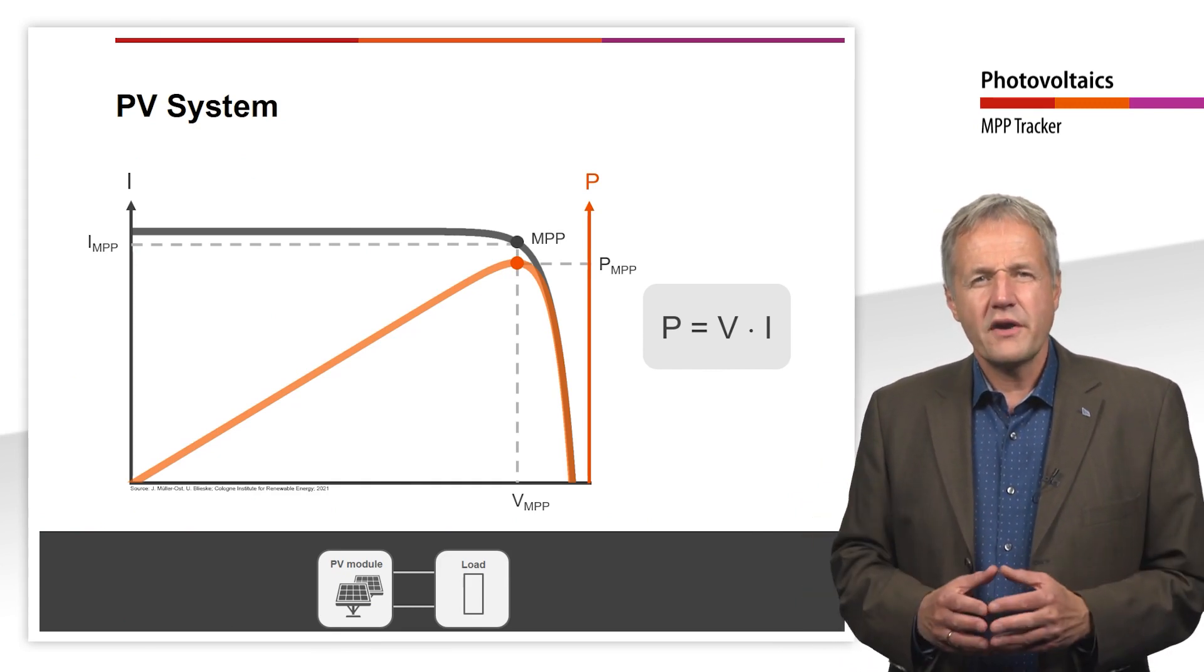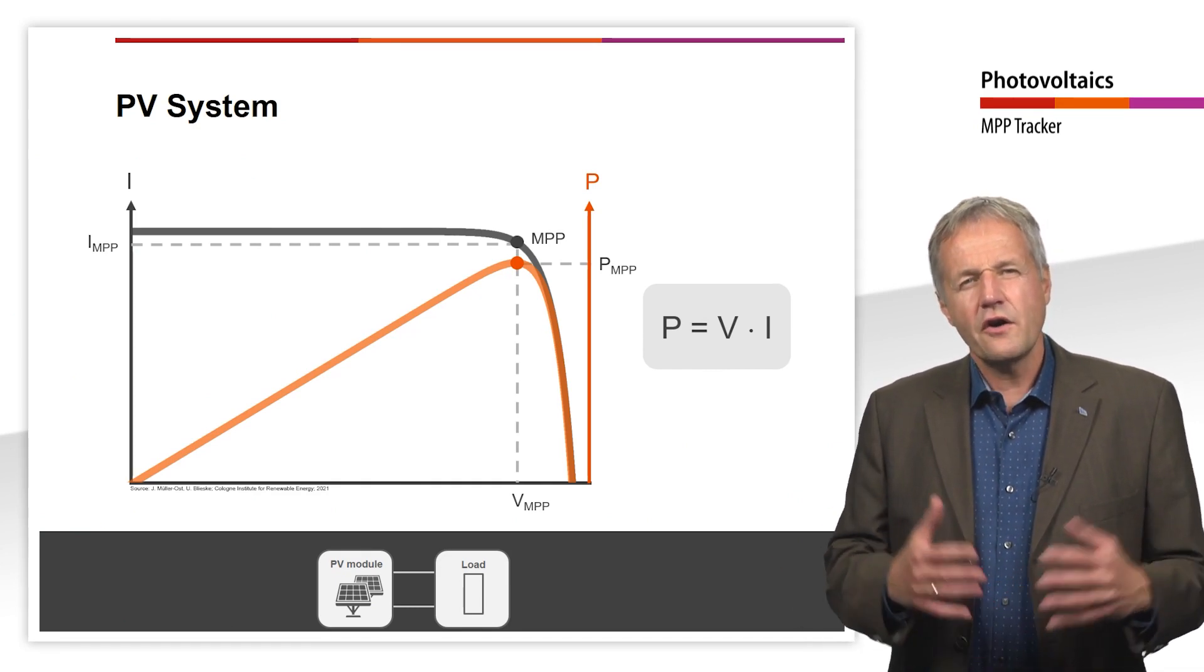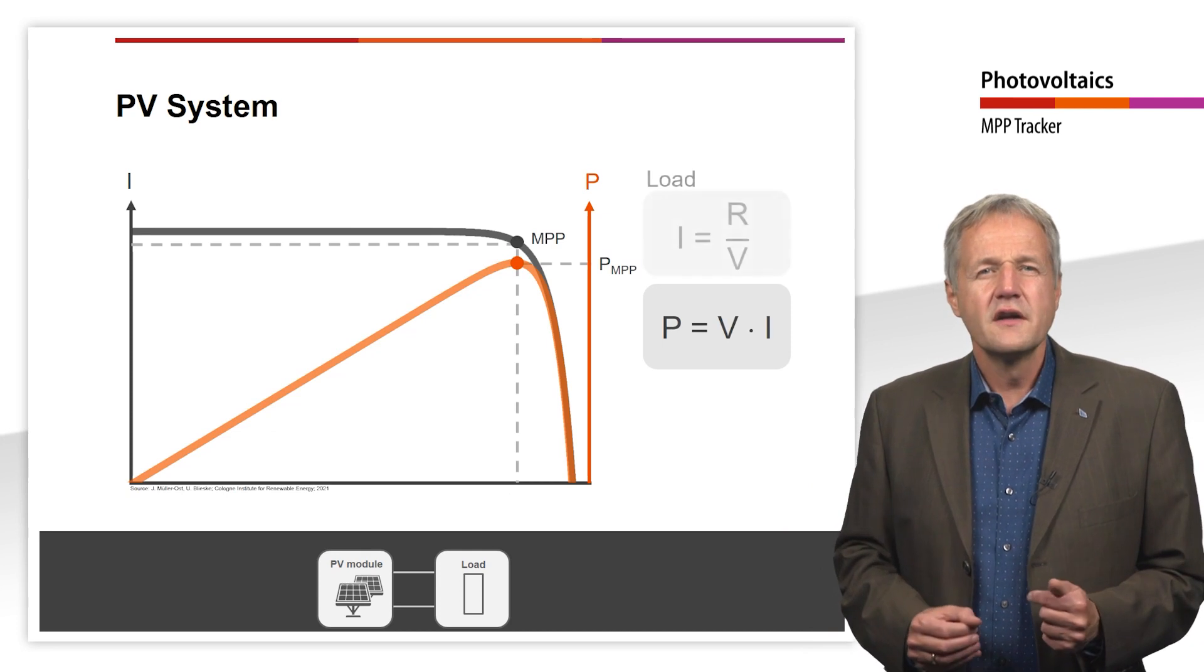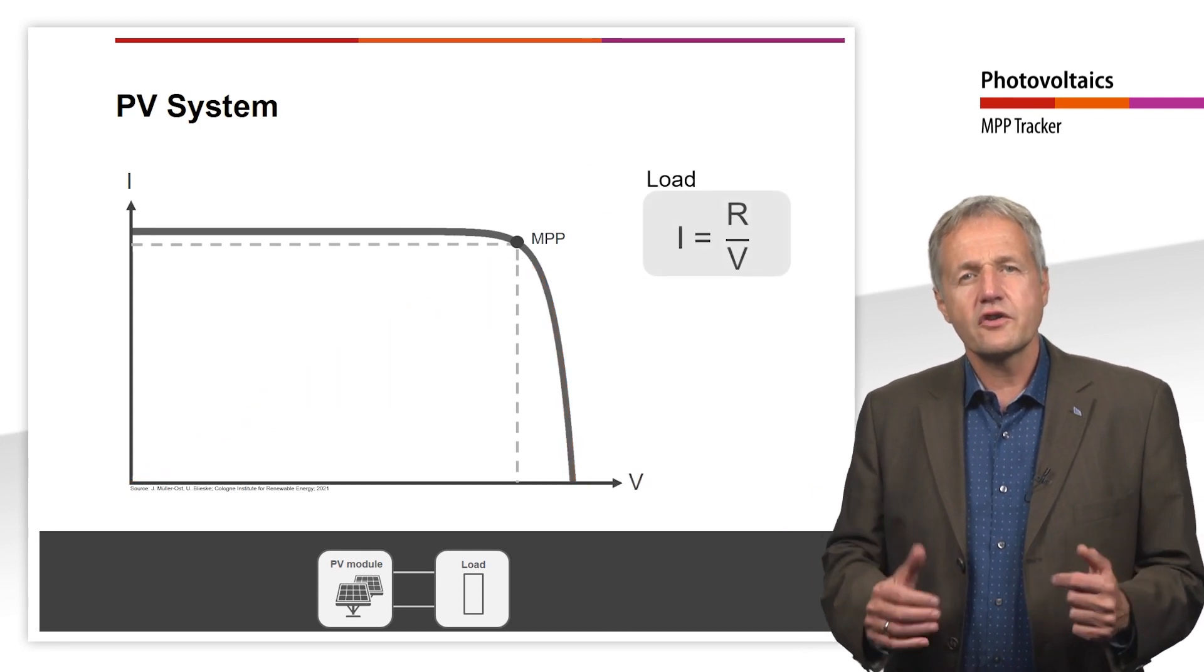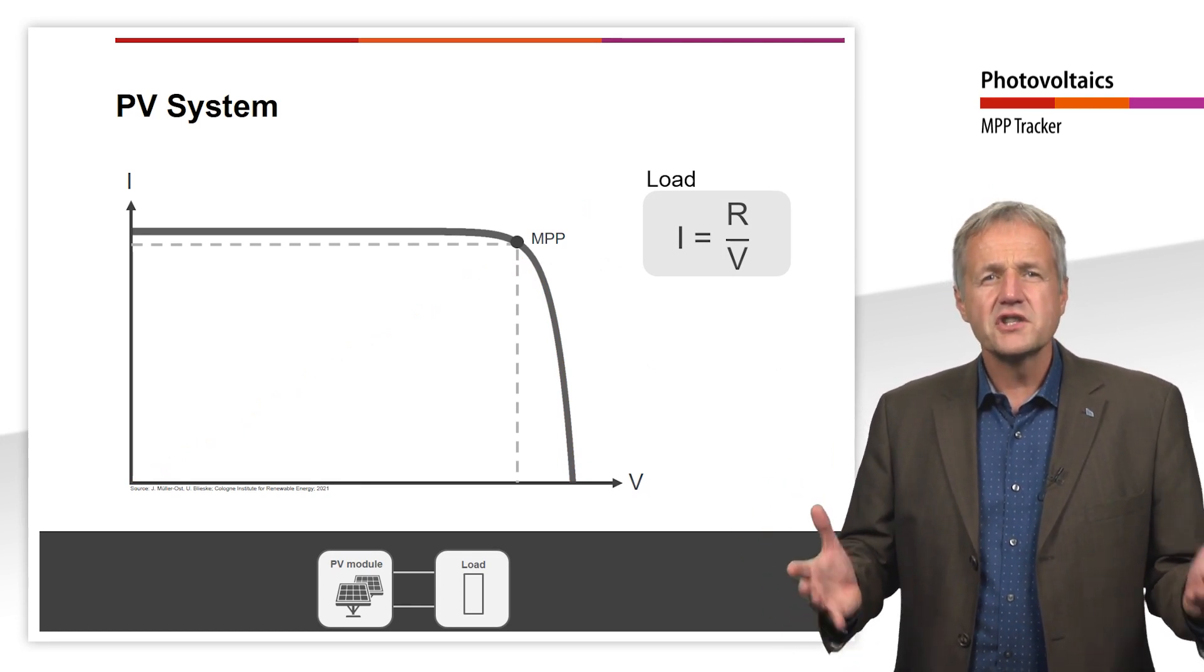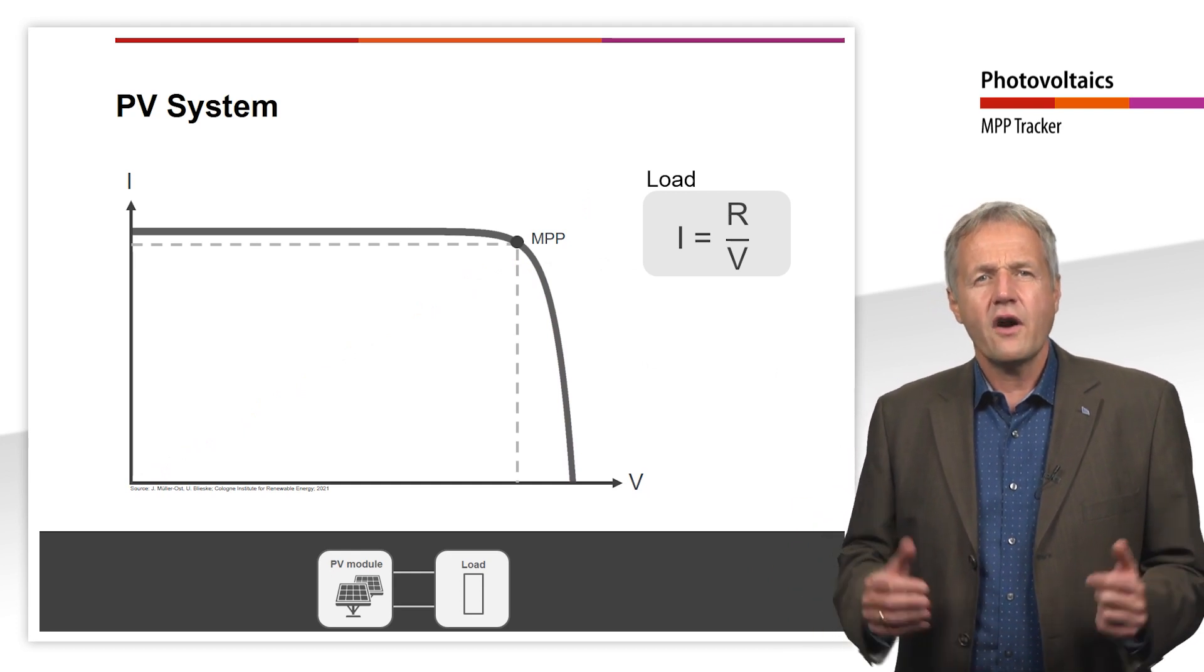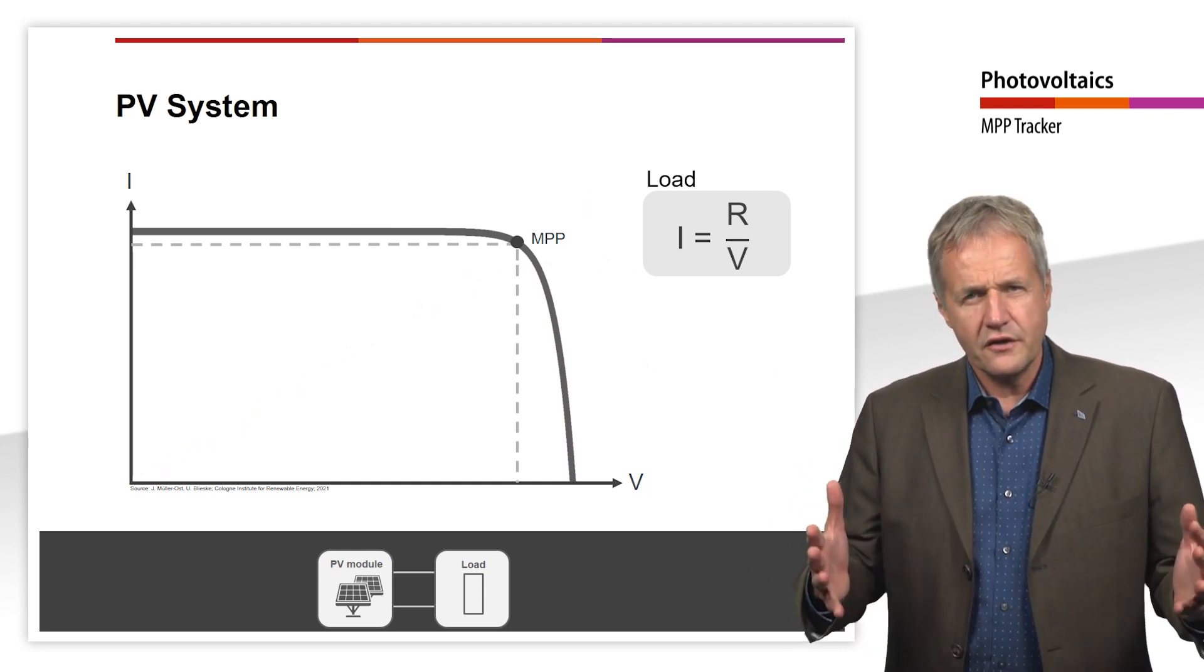But what does the operation point of the module actually depend on? According to Ohm's law, the current through the resistor corresponds to the coefficient of the applied voltage and the resistance. This is therefore a linear relationship between current and voltage.